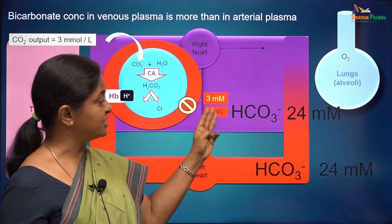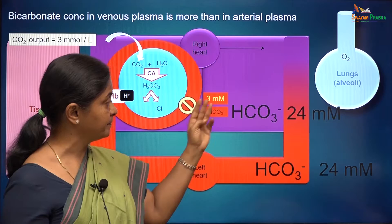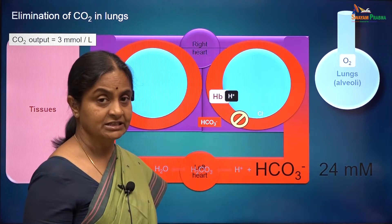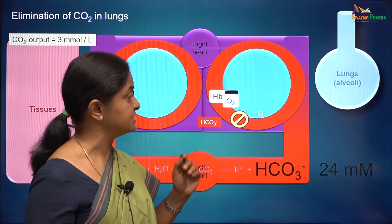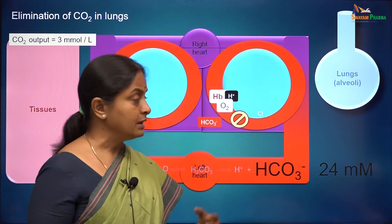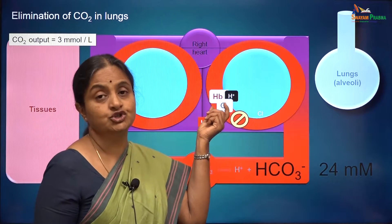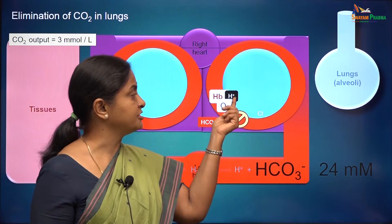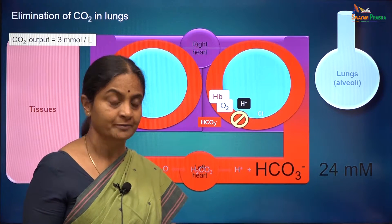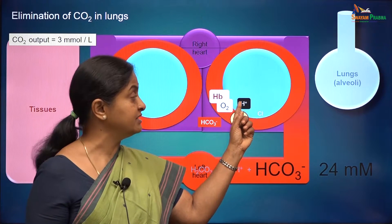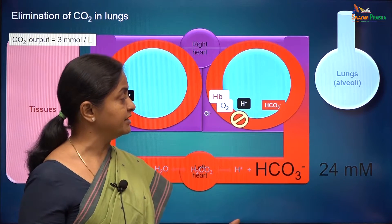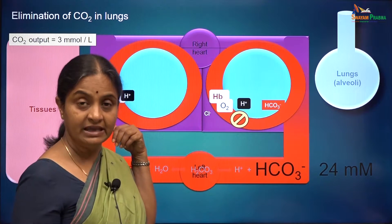Before considering what happens to pH because of this excess bicarbonate in venous blood, let us see what happens when erythrocytes reach the pulmonary circulation. As red blood cells flow through pulmonary capillaries, oxygen enters and moves into the red blood cells. Oxygen binds to hemoglobin, and oxyhemoglobin is a stronger acid — it will not keep hydrogen ions bound but releases them. Oxygen literally knocks off the hydrogen ions from hemoglobin, leading to a drop in pH within red blood cells, which reverses the anion exchanger — it now takes in bicarbonate ions and releases chloride.